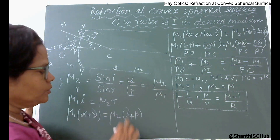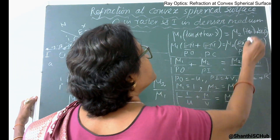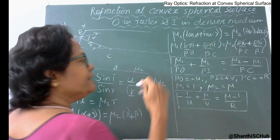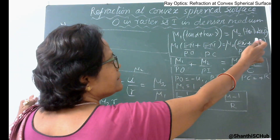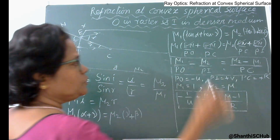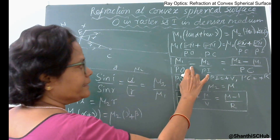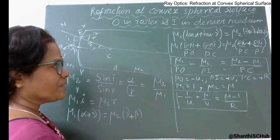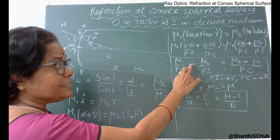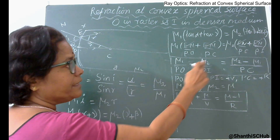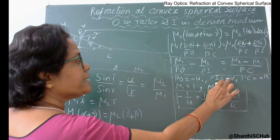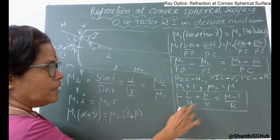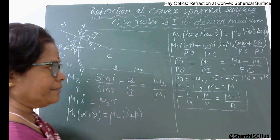But here from triangle EIC for the virtual image case, r = gamma + beta (compared to gamma − beta for the real image). This changes the equation to mu1 × (tan alpha + tan gamma) = mu2 × (tan gamma + tan beta). After EN cancels, the term mu2/PI becomes −mu2/PI for virtual image. Applying sign convention where PO = −u and PI = −v, the same final formula is obtained: −1/u + mu/v = (mu − 1)/R.